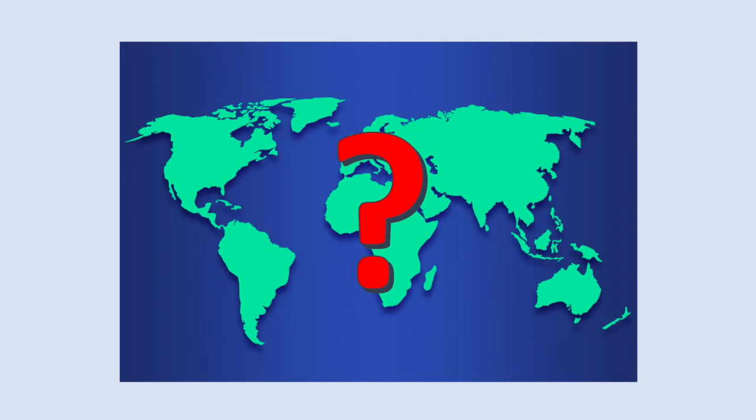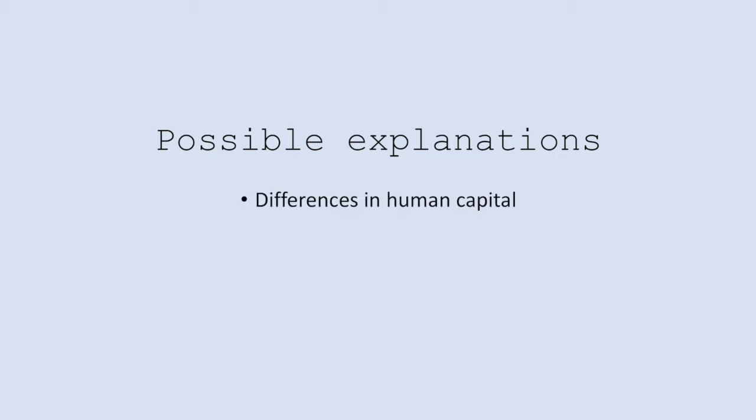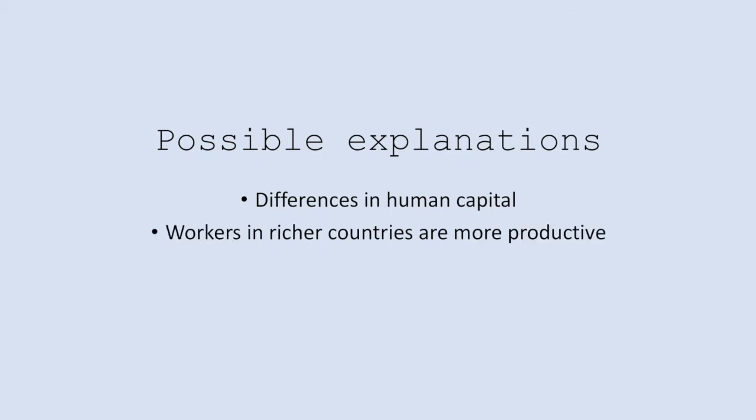To start looking into explaining this, we need to alter our initial assumptions of the model. The first way that Lucas tries to explain these differentials is by introducing differences in human capital into the model. Workers in the United States on average have much more education and training than the equivalent workers in poorer countries. By using some rough estimates in his paper, this reduces the ratio of marginal product of capital from 58 down to 5.